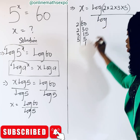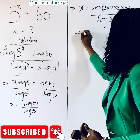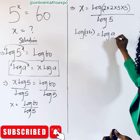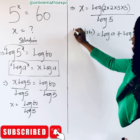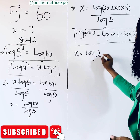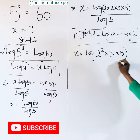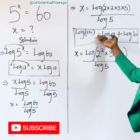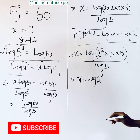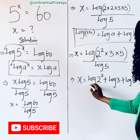We bring down the log 5 in the denominator. Now remember the log product rule: log(a × b) = log a + log b — the multiplication sign turns to addition. Also note that 2 × 2 can be written as 2². Applying both rules, we get: x = log(2²) + log 3 + log 5, all divided by log 5.